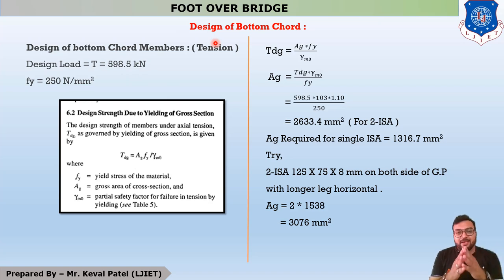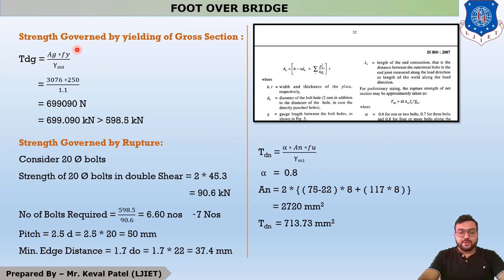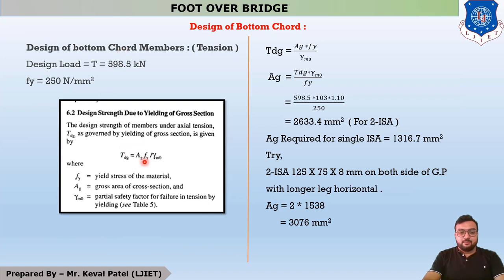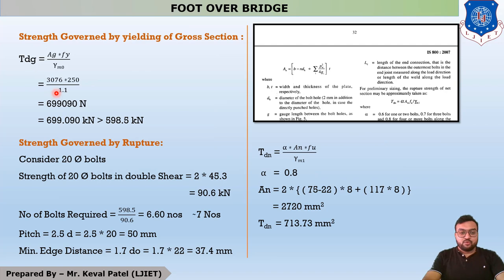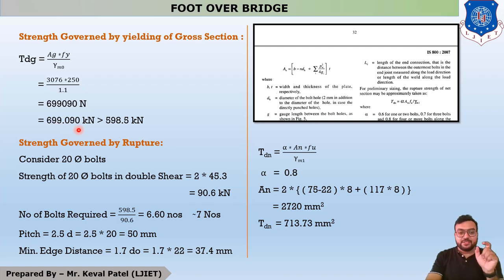There are three checks in the design of the bottom chord. Check one is strength governed by yielding of the cross section. Using the provided area, TDG = 3076 × 250 / 1.1 = 699.09 kN, which is greater than the maximum load of 598.5 kN. Check one is satisfied.